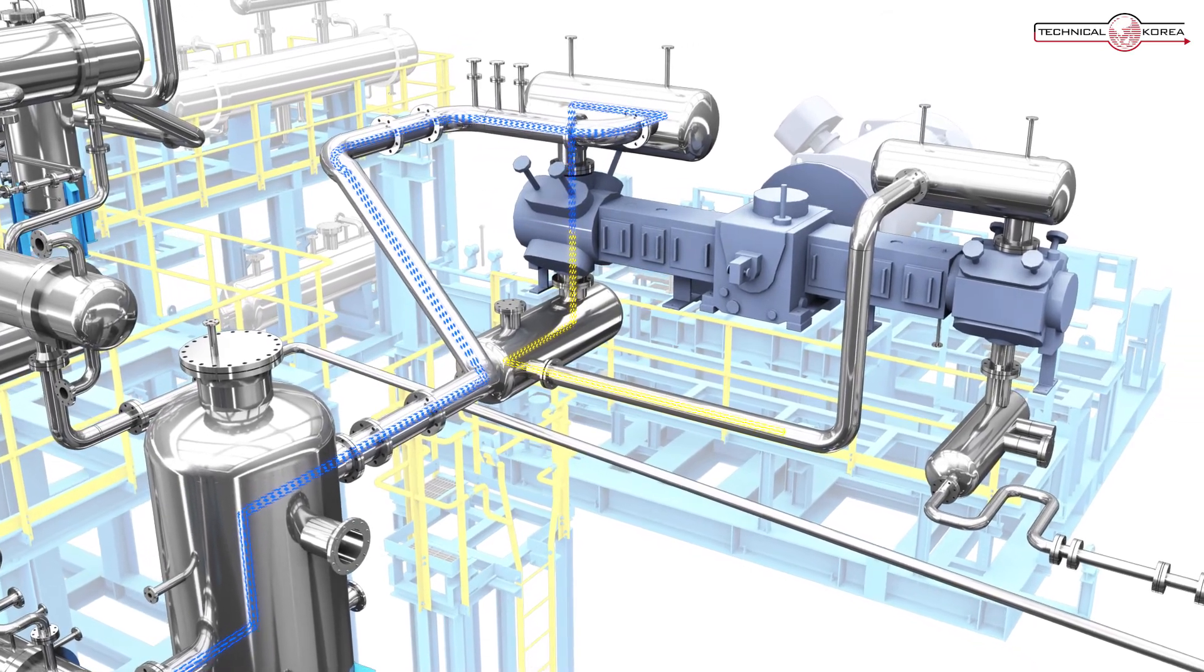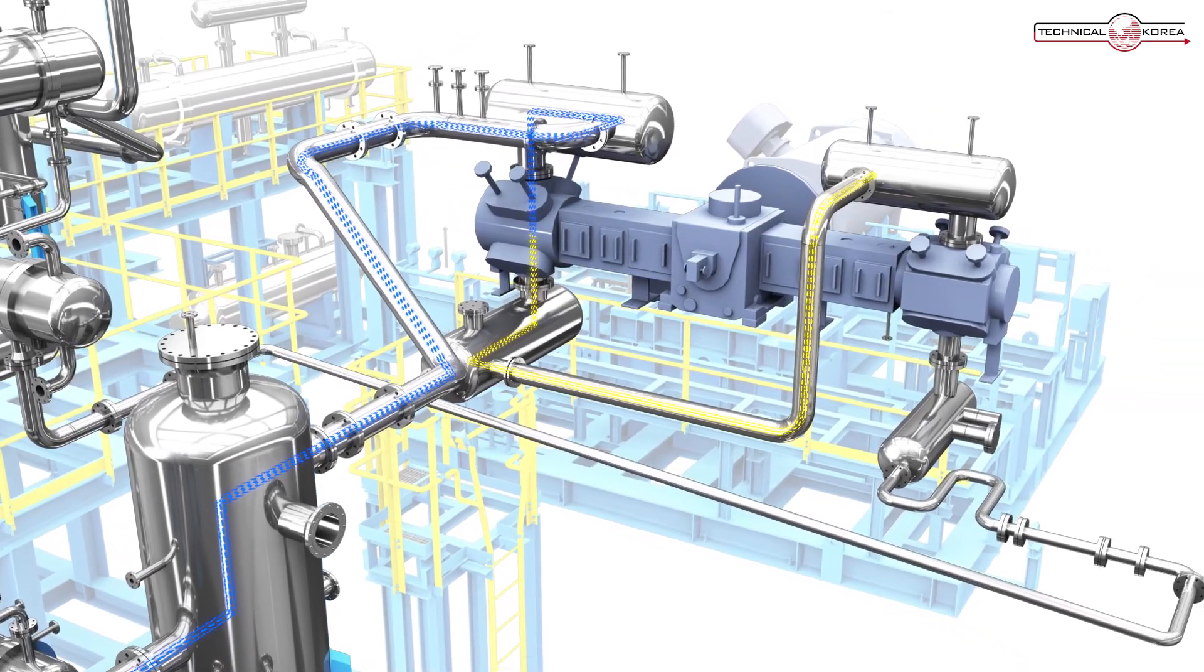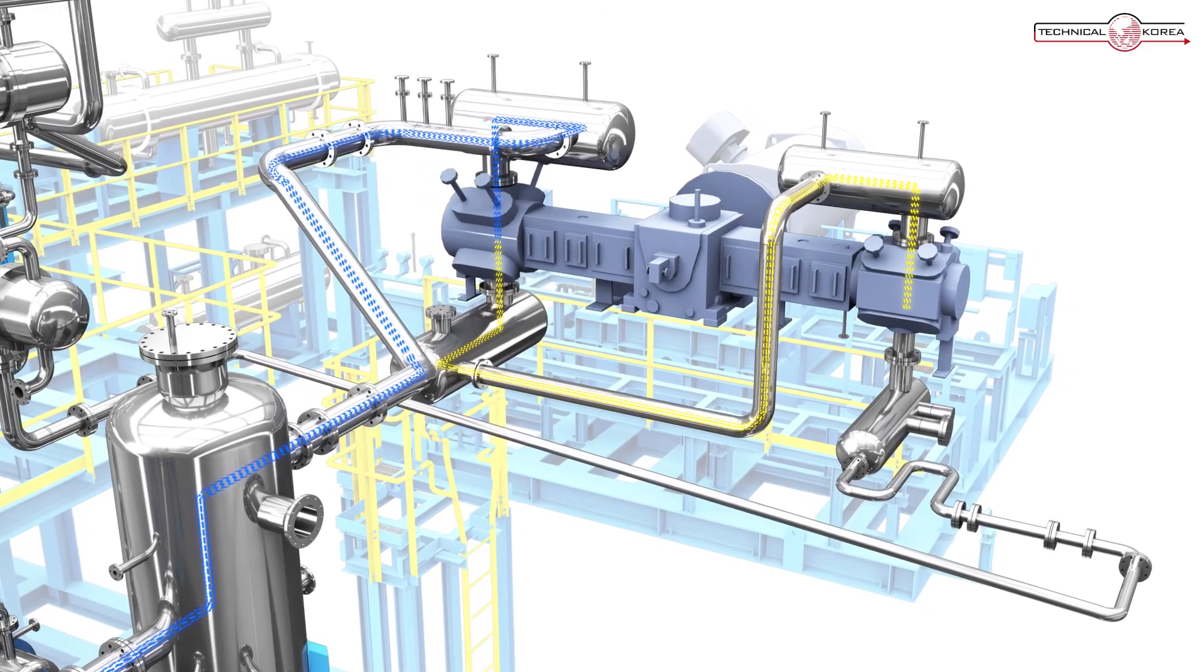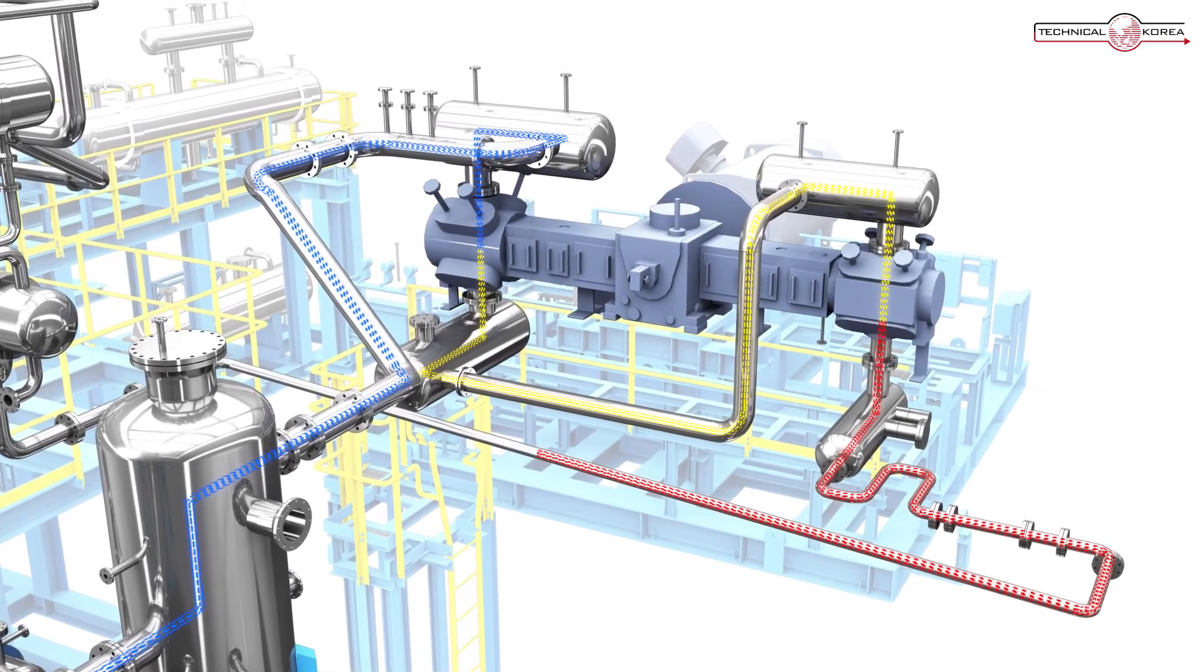Этилен BioEG сжимается компрессором BioEG, а сжатый газ проходит промежуточное охлаждение с помощью вторичного охладителя этилена.